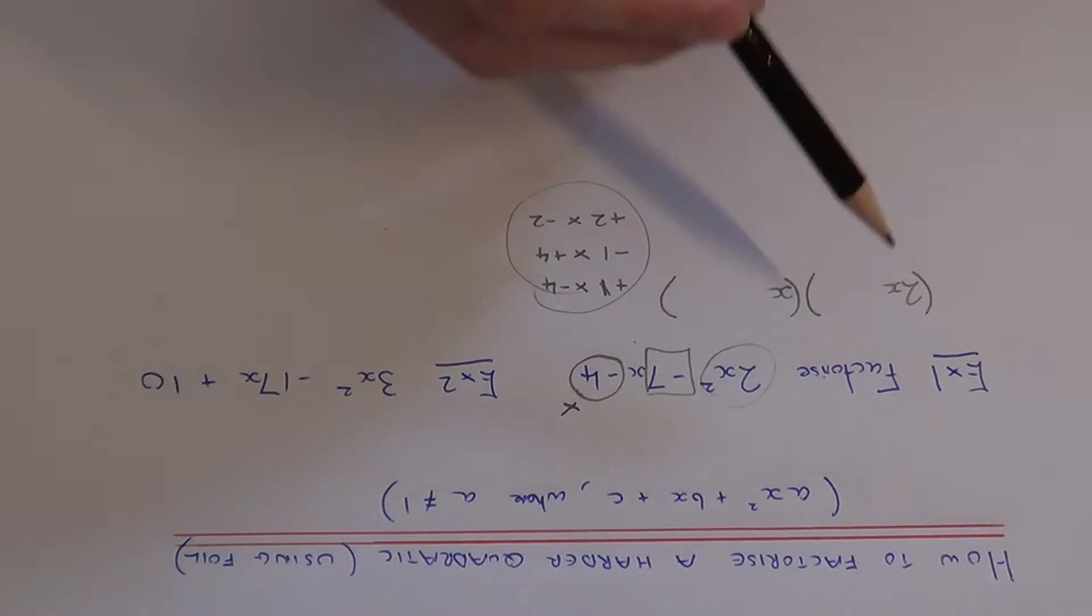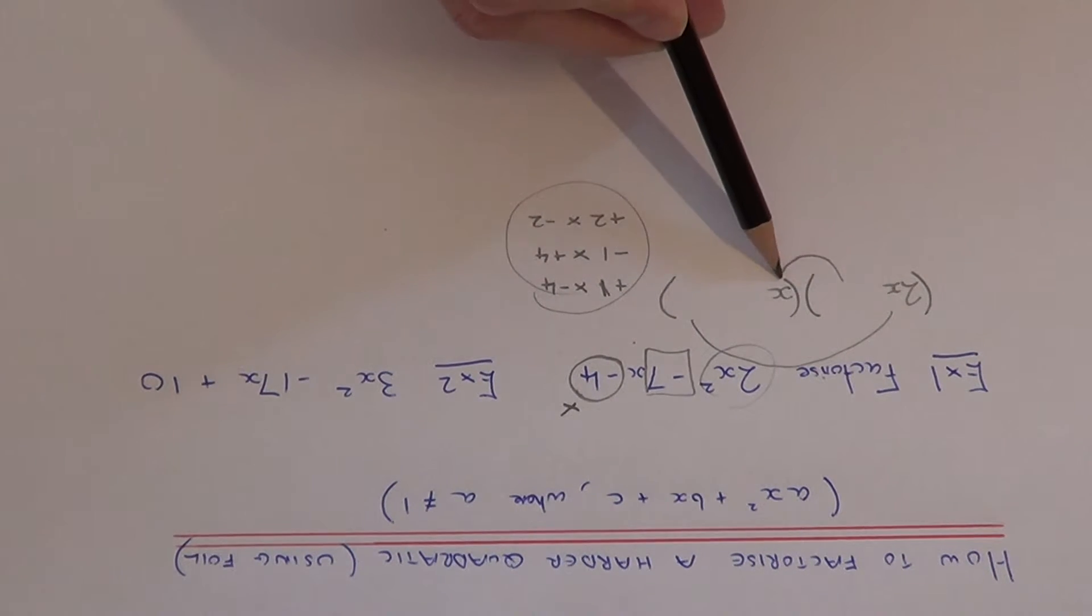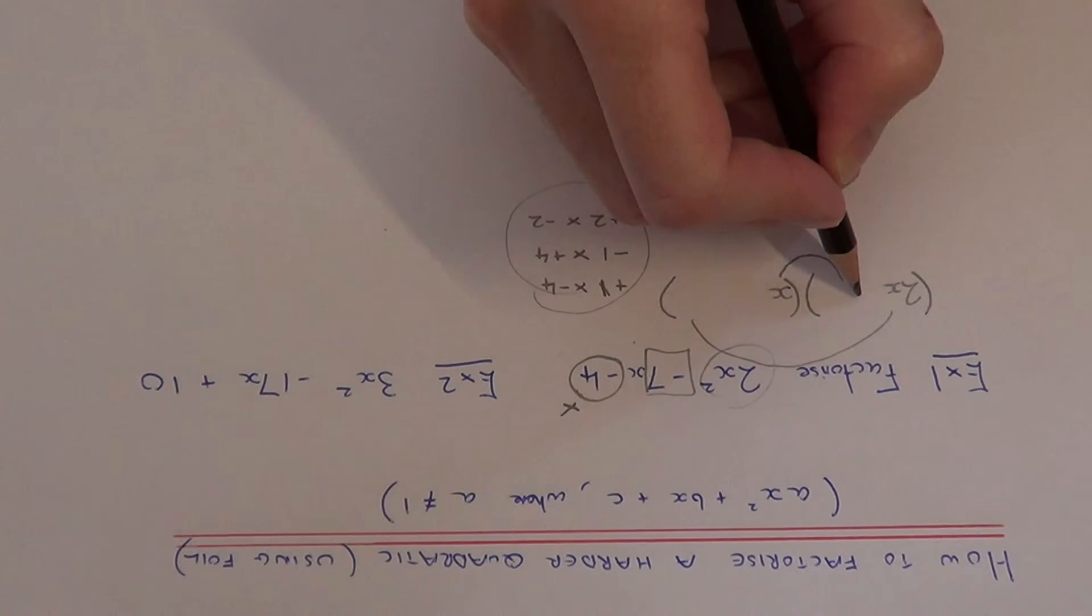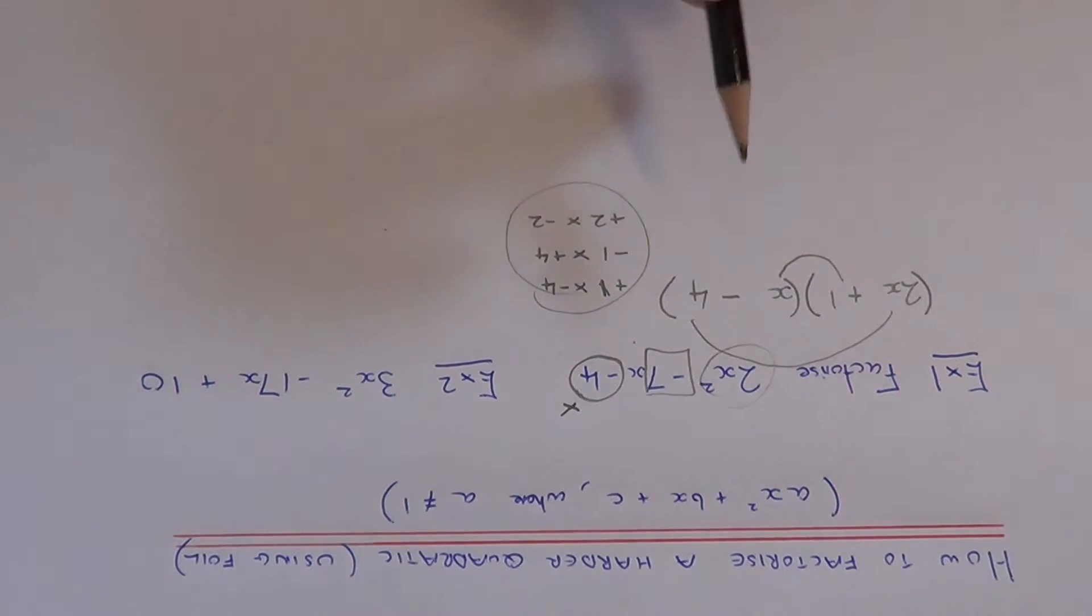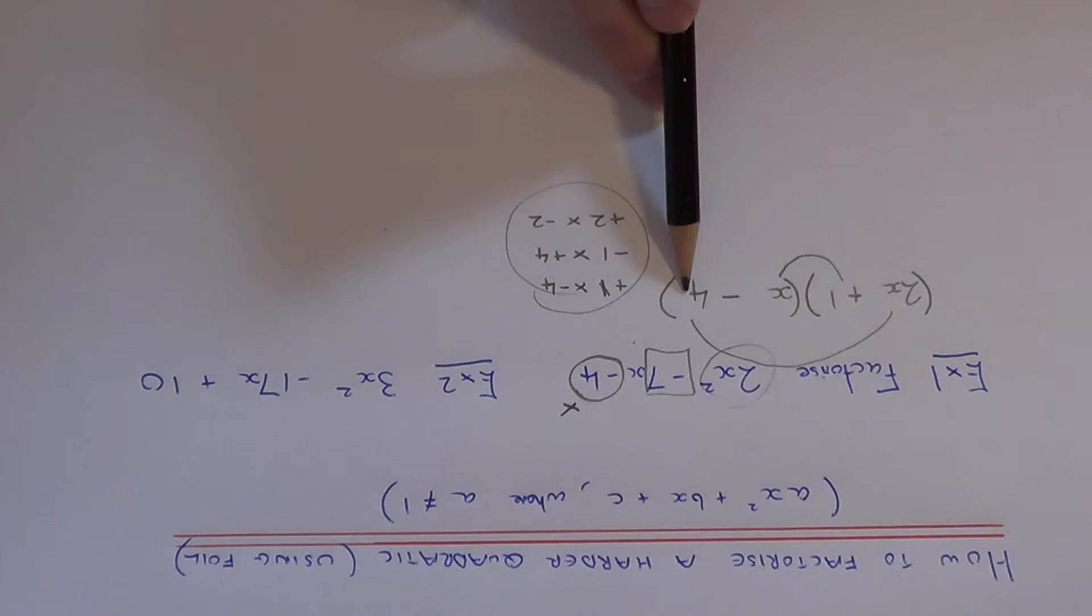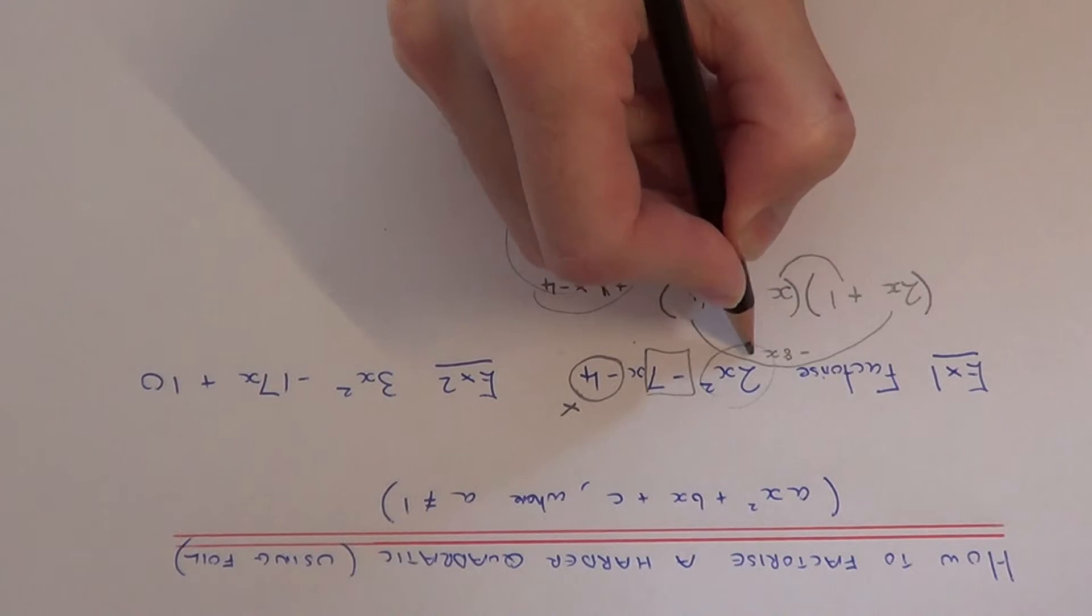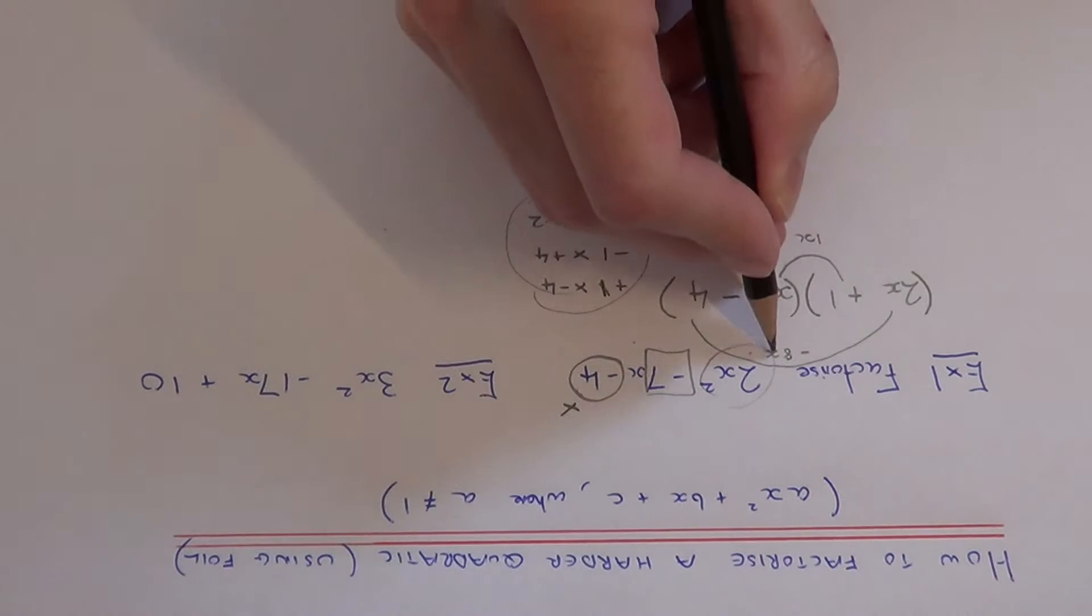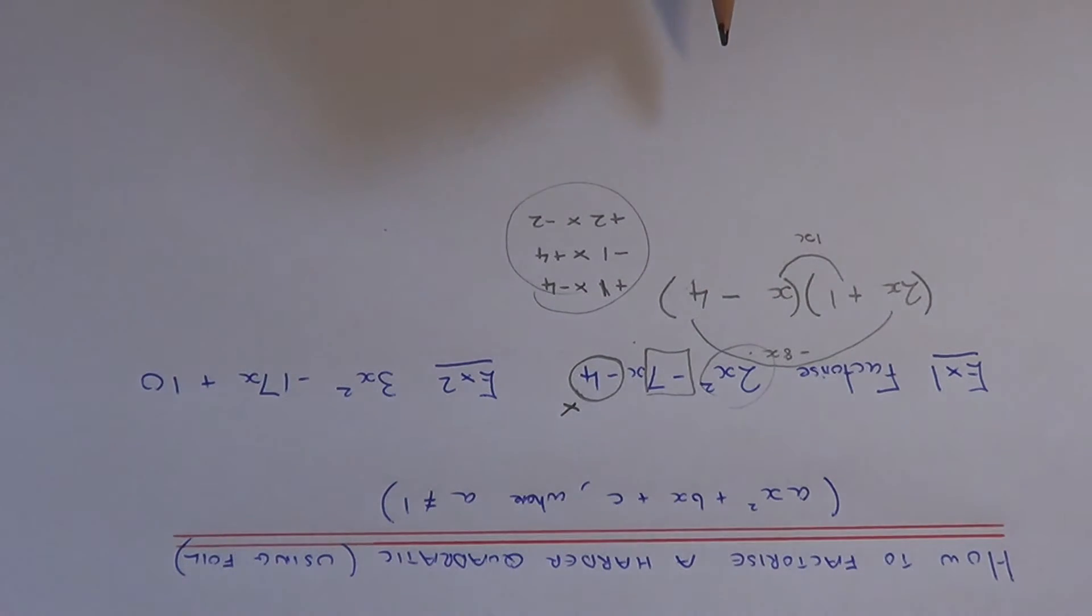To do this we need to check the outer pair and the inner pair of terms. I think that it's going to be plus 1 and minus 4, because if you check the outer pair, 2x times minus 4 is minus 8x and 1 times x is 1x, and minus 8x and 1x gives minus 7x.